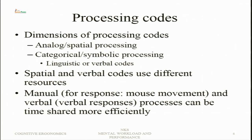We talked about processing codes, where the dimensions were analog and spatial processing, and categorical and symbolic processing. We made a distinction between spatial and verbal codes, which use different resources, so interference will not be there between the verbal and the spatial codes.